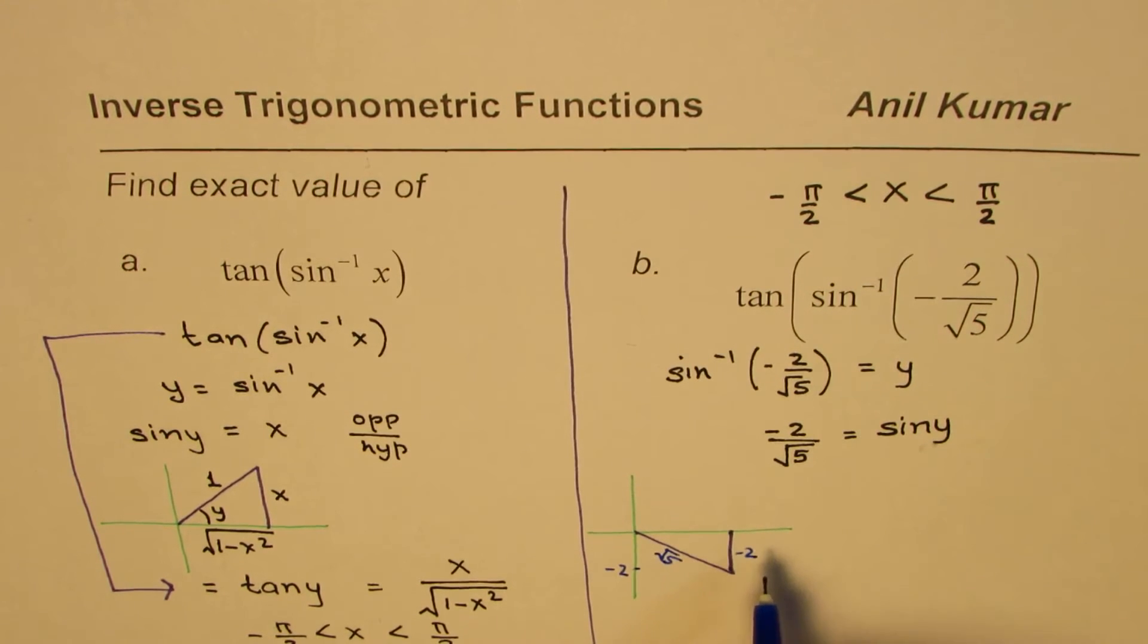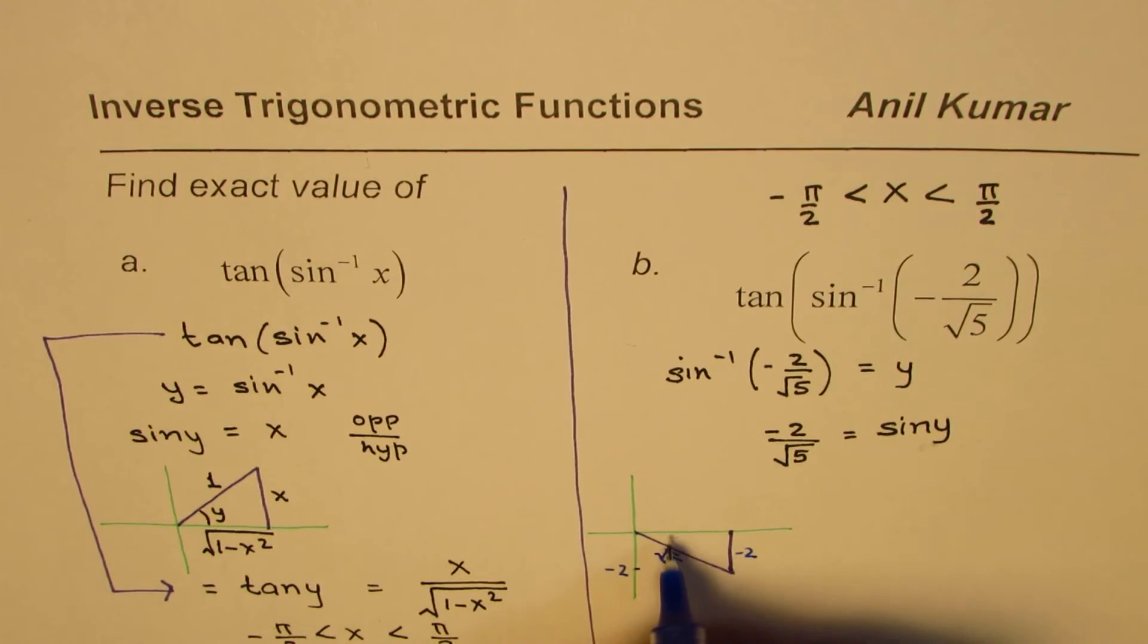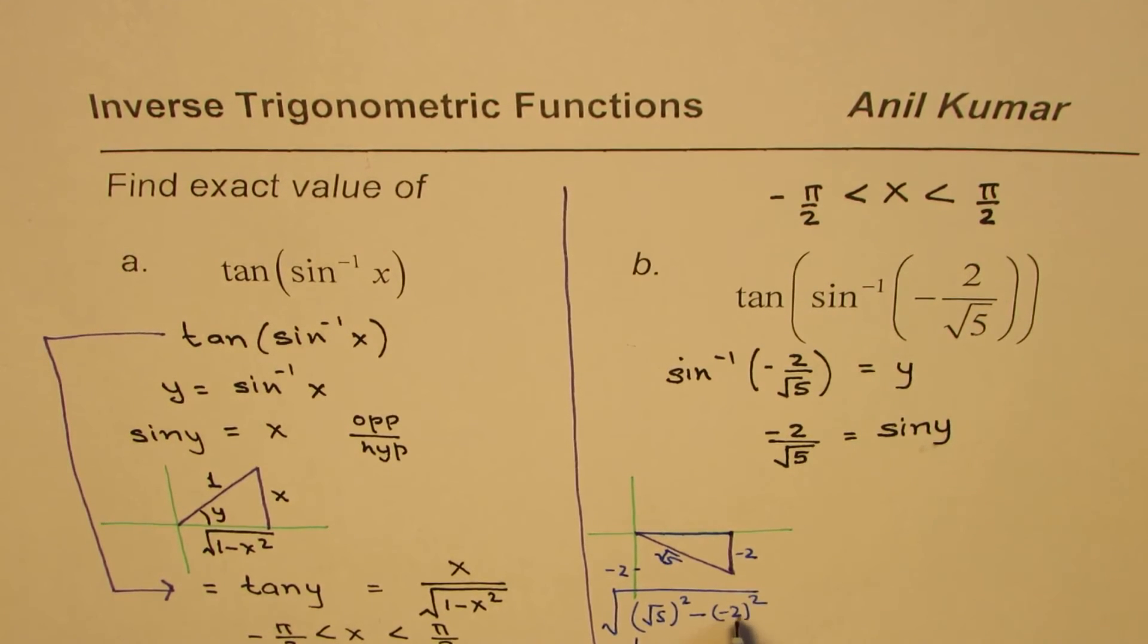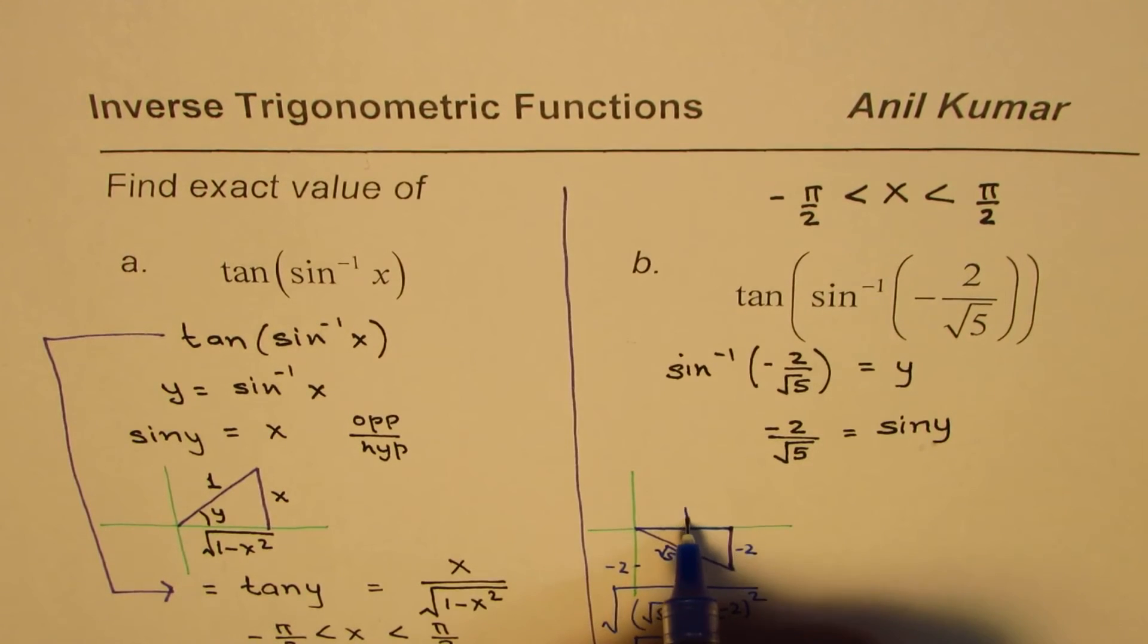Now what is the adjacent side? c² minus b² square root. Square of square root 5, you can find this side: square root of 5 minus 4. So this is what the adjacent side is going to be, so that is equal to √(5 - 4) square root, and this is 1.